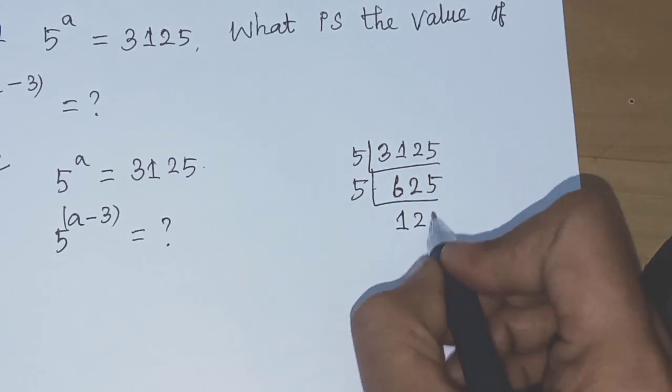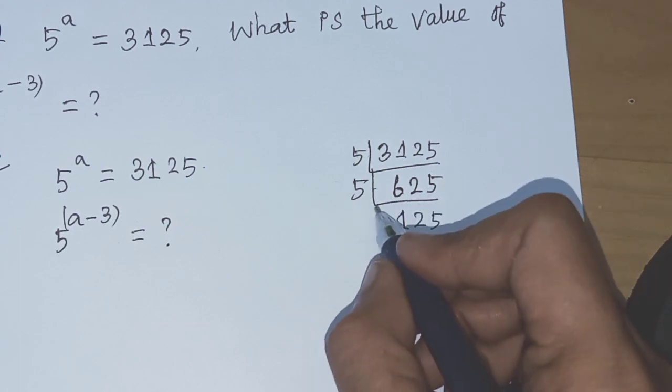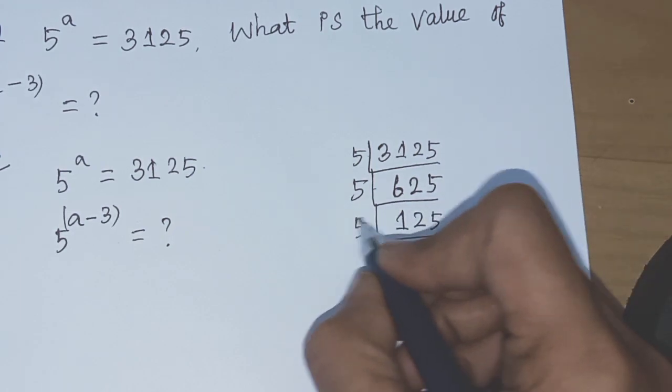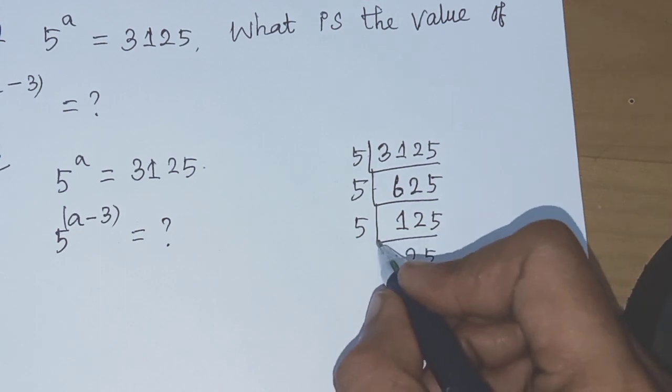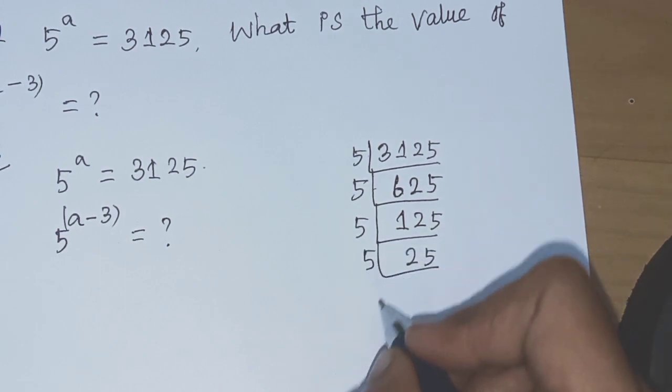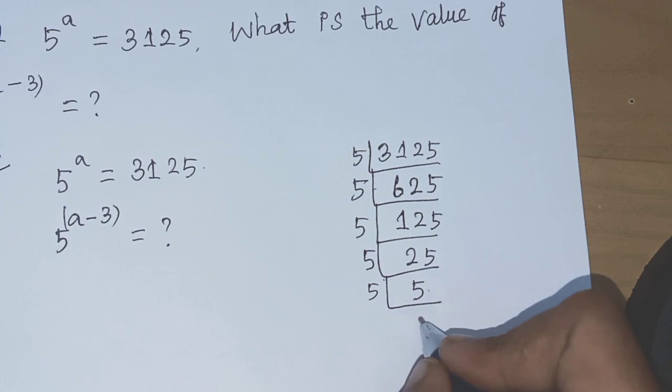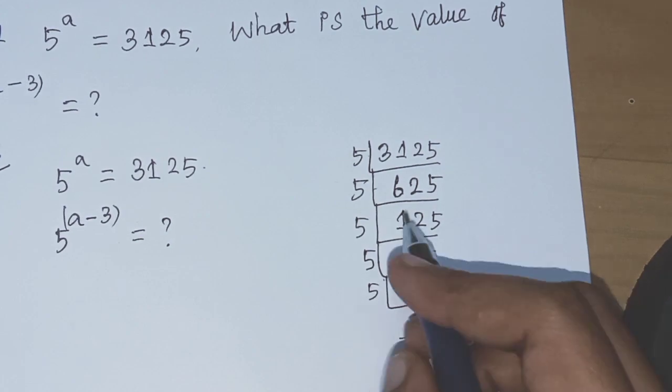So 125. 625 divided by 5 is 125. Divide by 5 again: 25. Again divide by 5: 5. Again divide by 5: 1. 5 into 5 is 1.